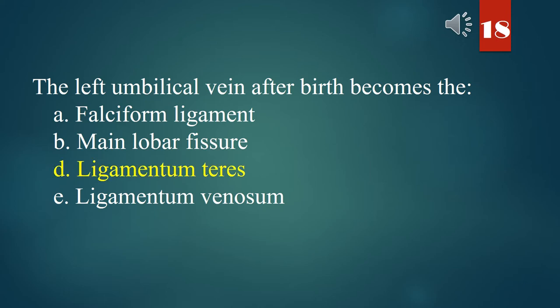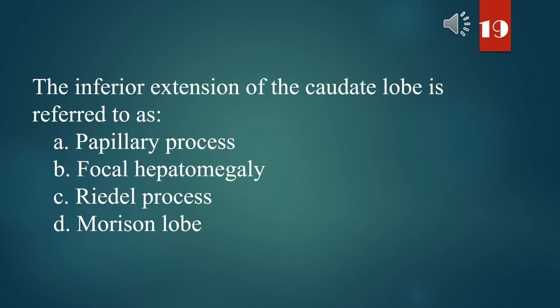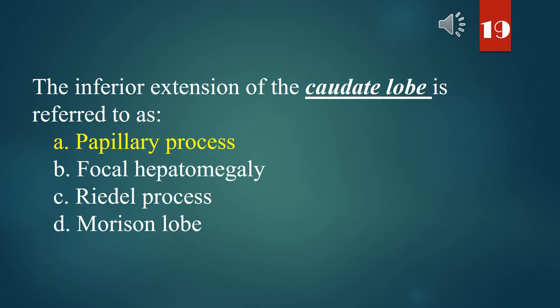The inferior extension of the caudate lobe is referred to as: A. Papillary process. B. Focal hepatomegaly. C. Riedel's process. D. Morrison lobe. The answer is A. Papillary process.